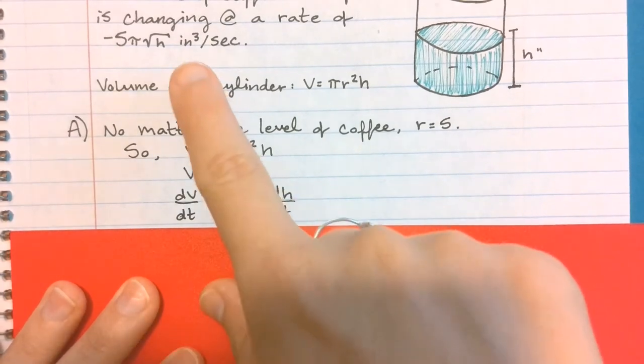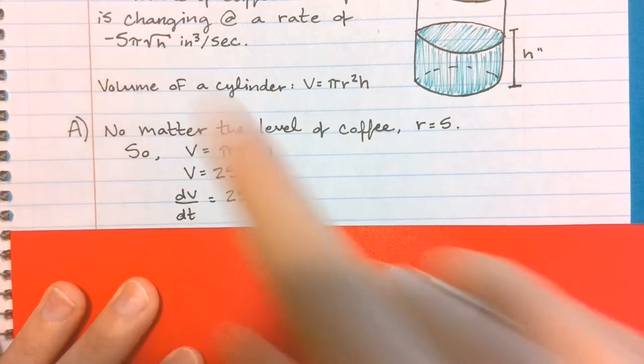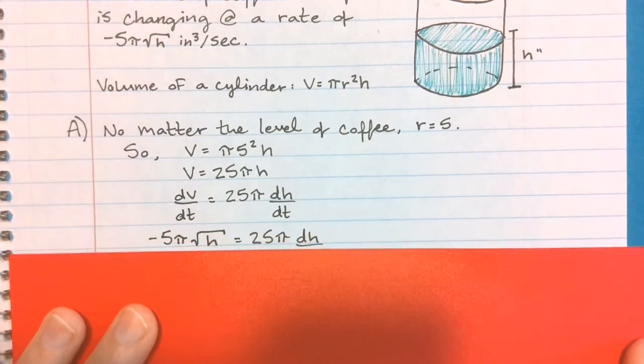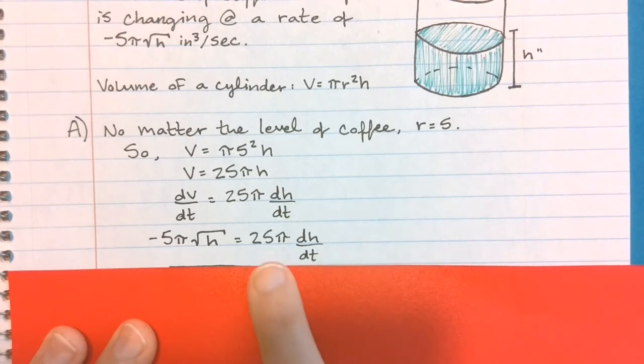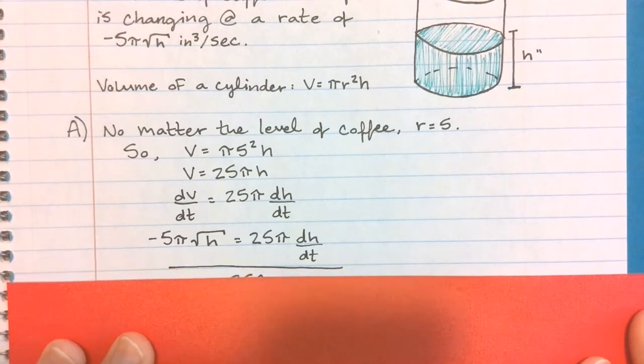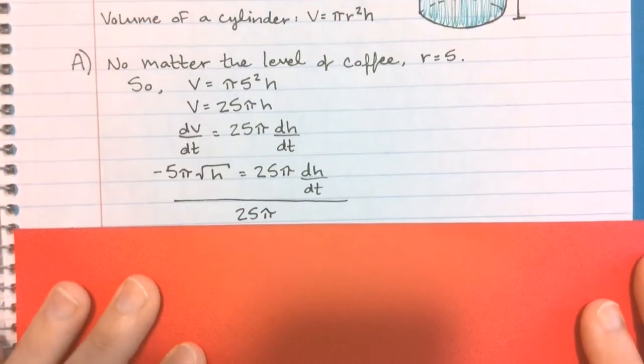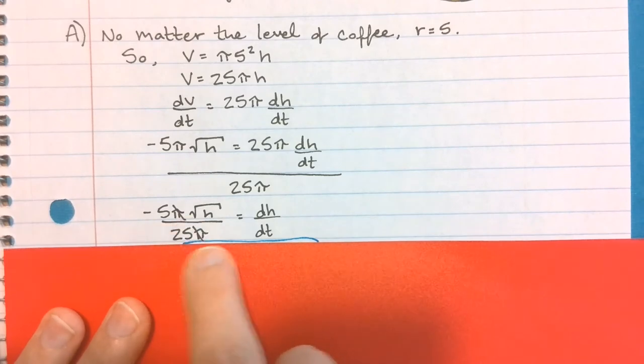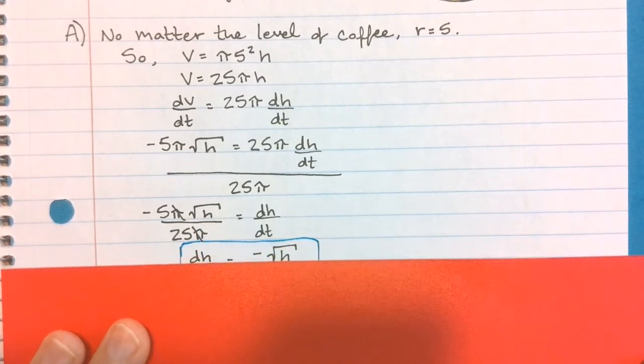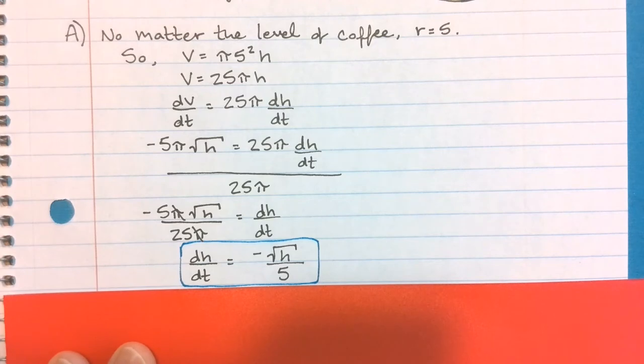Now they told me what dv/dt is, so I'm going to replace my dv/dt with this negative 5π√h. My goal was to solve for dh/dt, so I'm going to divide both sides by 25π. When I simplify, my π's cancel, and my 5 over 25 ends up being 1 over 5, and it was all negative. So there's my verifying. Make sure you have as many steps as possible to show we know what we're talking about.